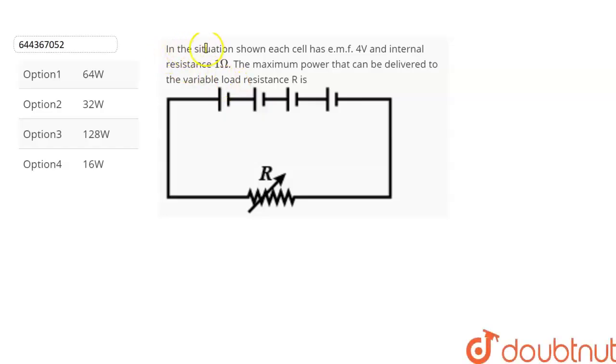The question is: in the situation shown, each cell has an EMF of 4 volts and internal resistance of 1 ohm. We have to find the maximum power that can be delivered to the variable load resistance R, and we are given four options from which we have to choose the correct option. Let's find out.